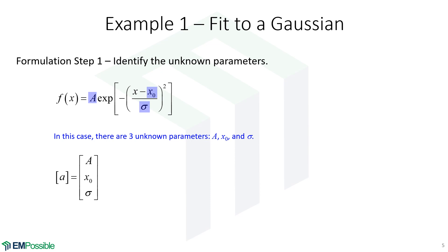So the step one here in the formulation is identify the unknown parameters. What are the coefficients that define our curve fit? So our column vector containing our curve fit parameters will contain our A, X0, and sigma.